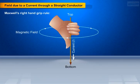Now let's move on to Maxwell's right hand grip rule. If the direction of current is known, then the direction of magnetic field produced by a straight wire can be obtained with the help of Maxwell's right hand thumb rule.